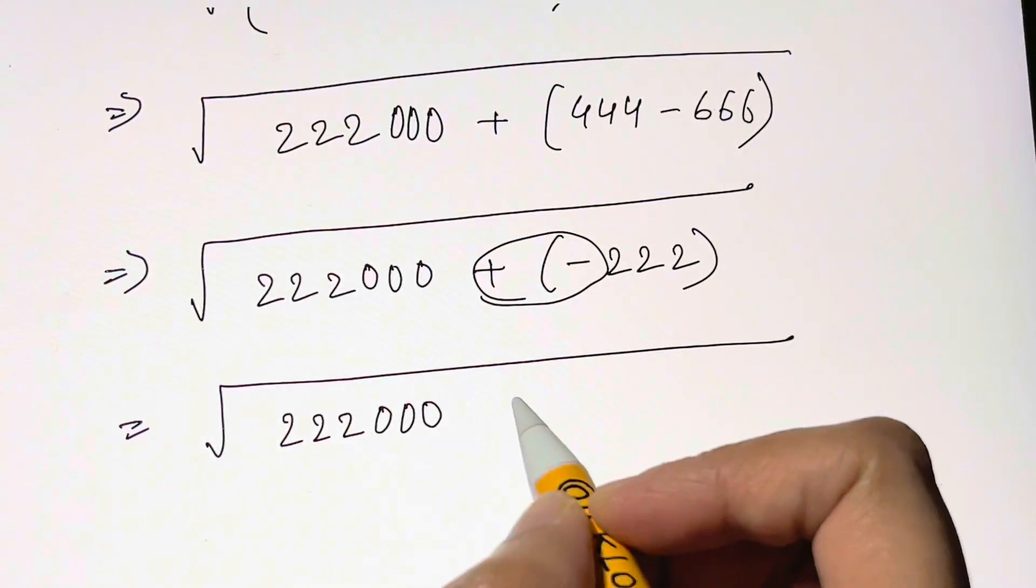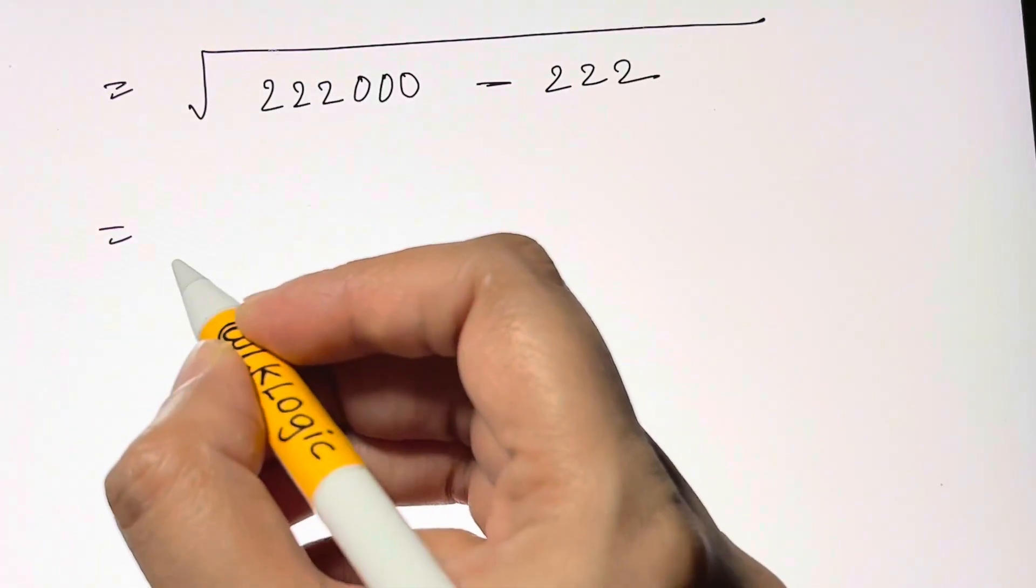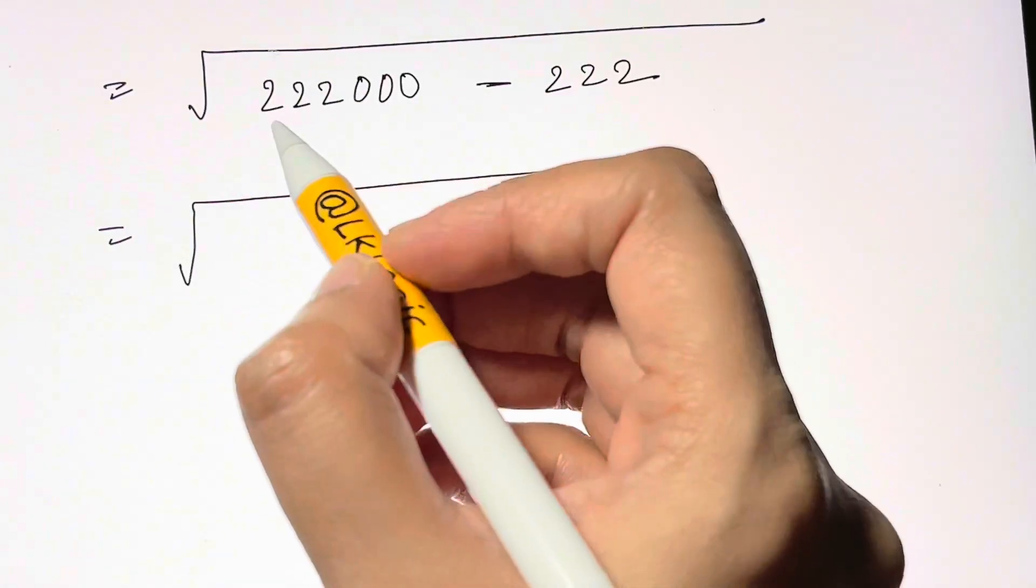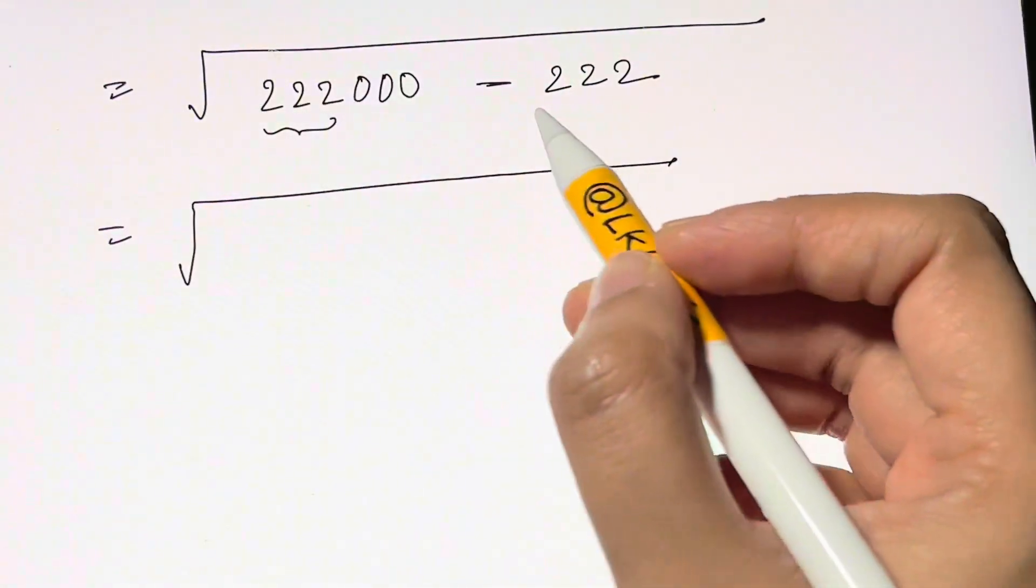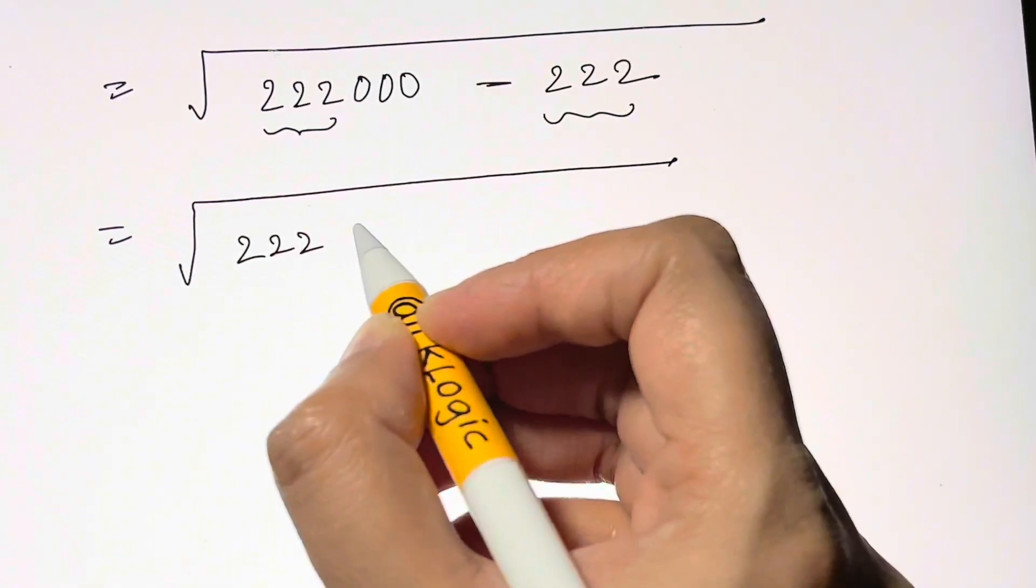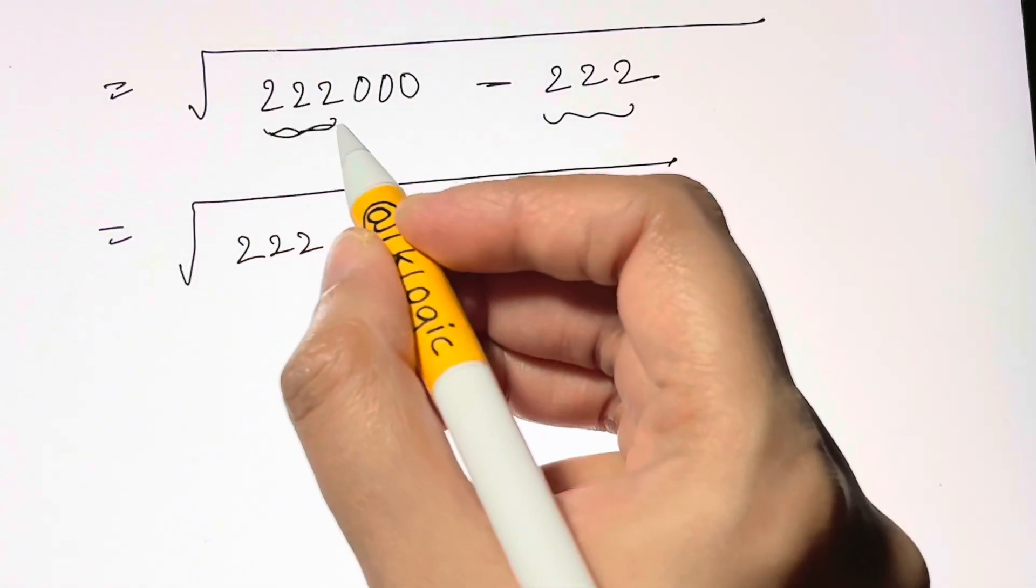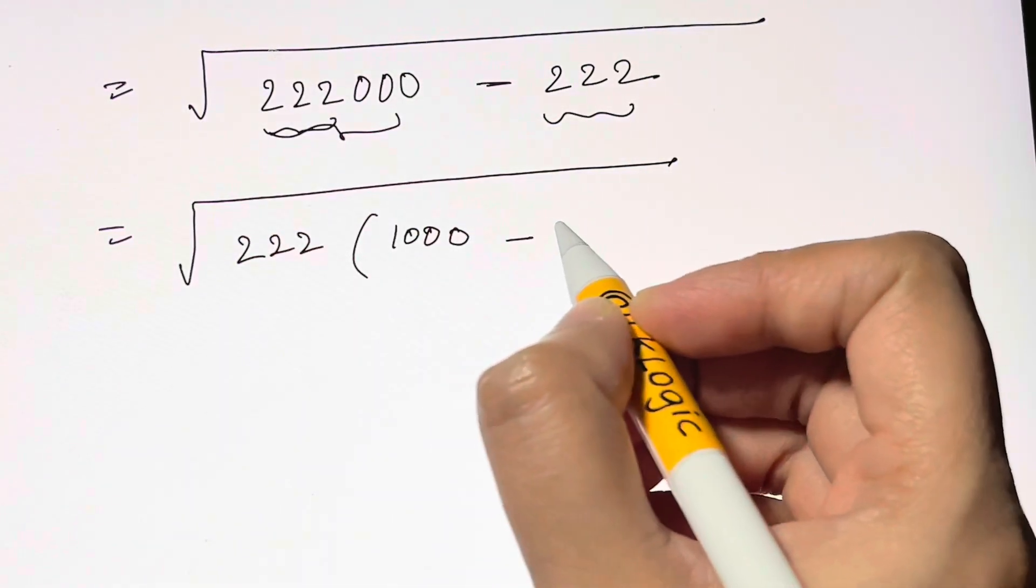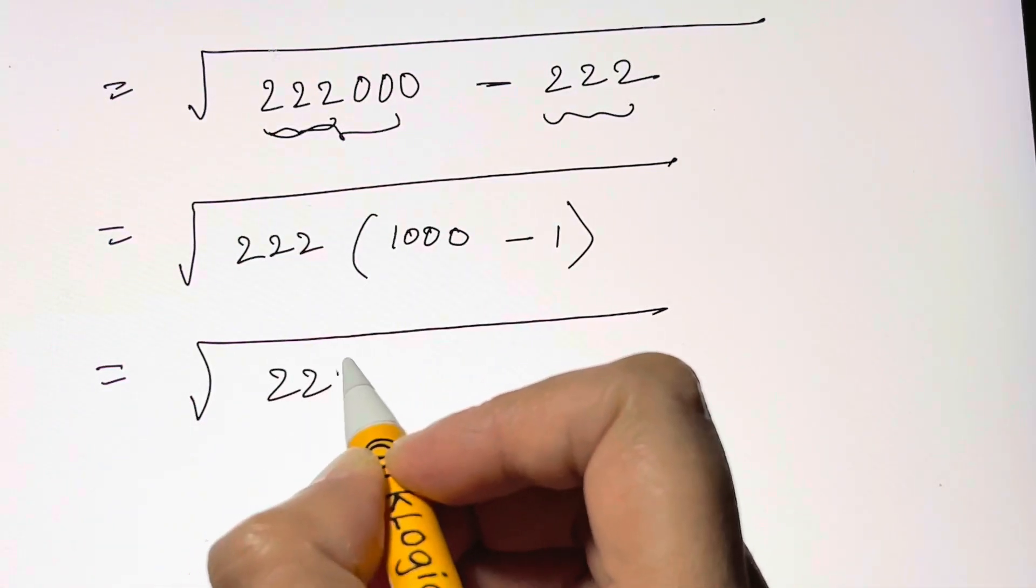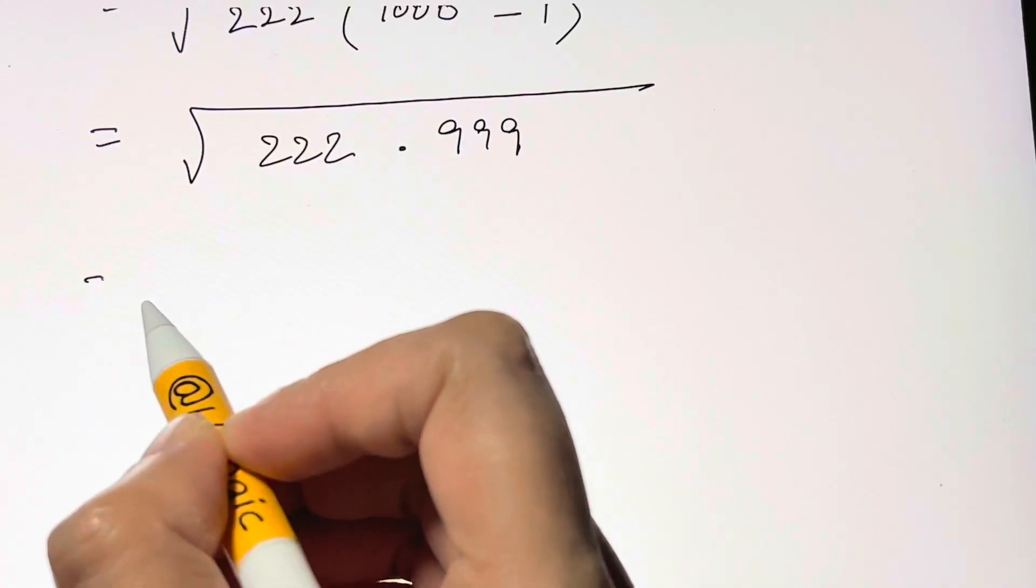Then we'll have under the root of triple 2. Now as you can see, you have 222 222 common, we can take it out, 222. So we are left with 1000. If you multiply by 1000, you get better same thing minus 1. And here we have triple 2 times 999.